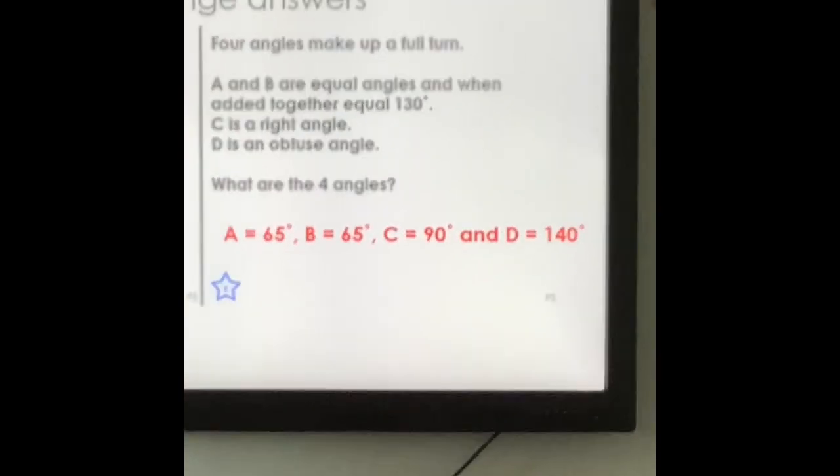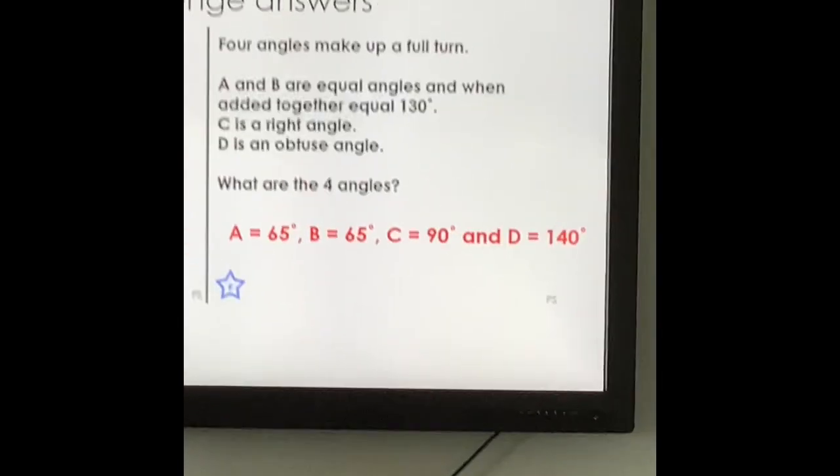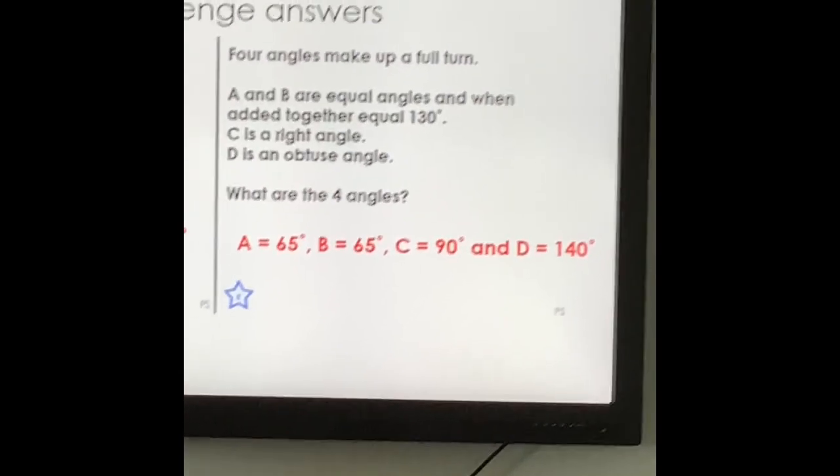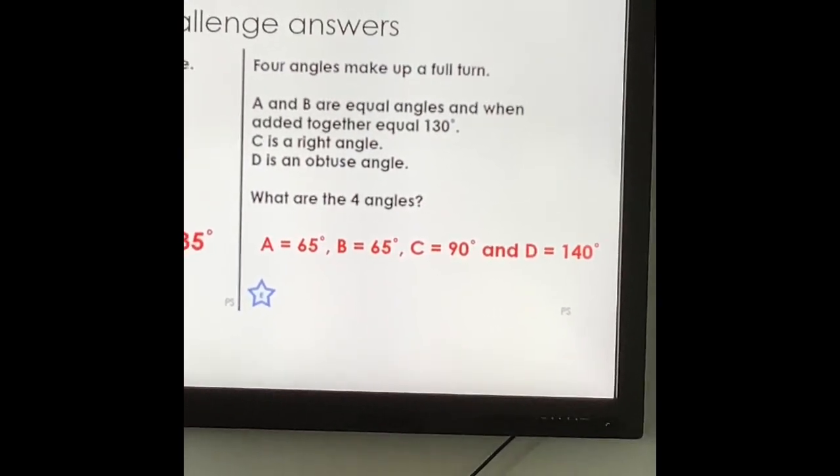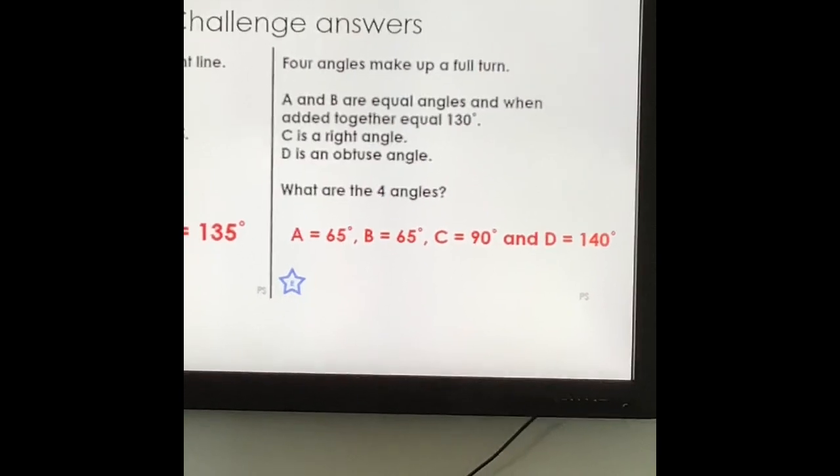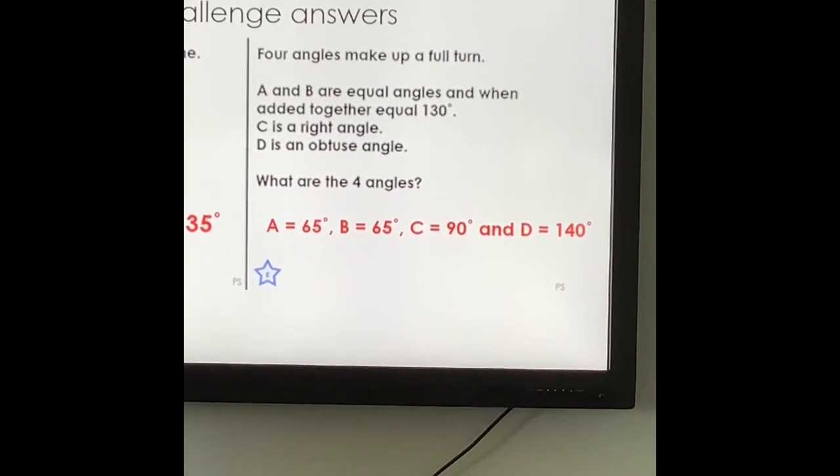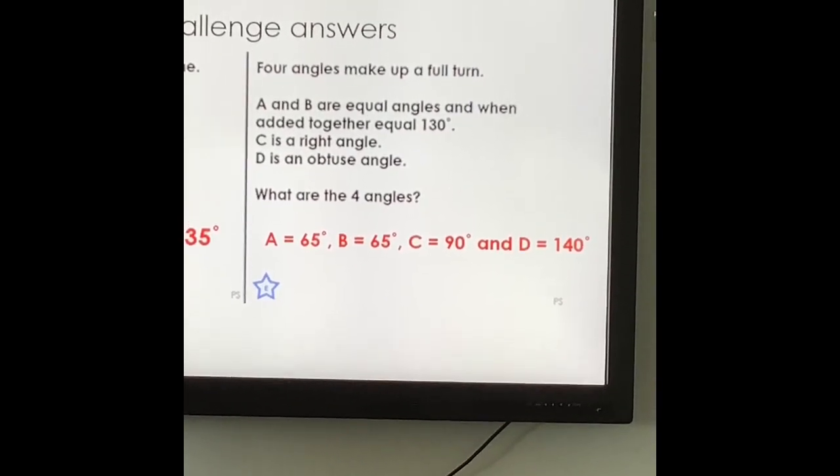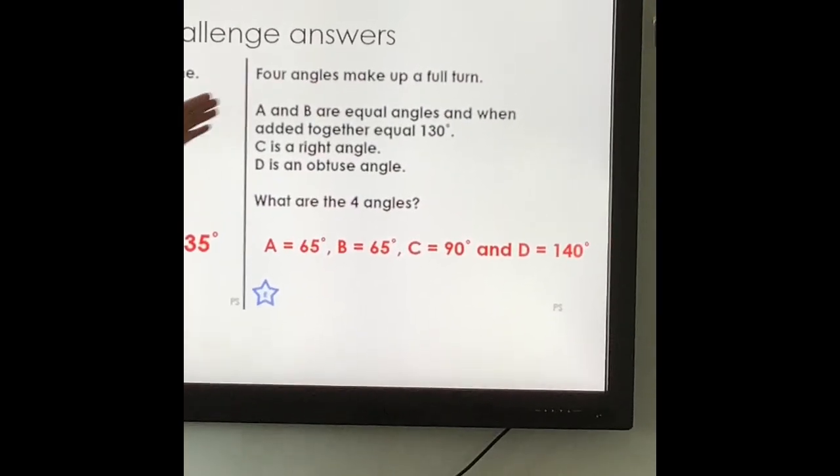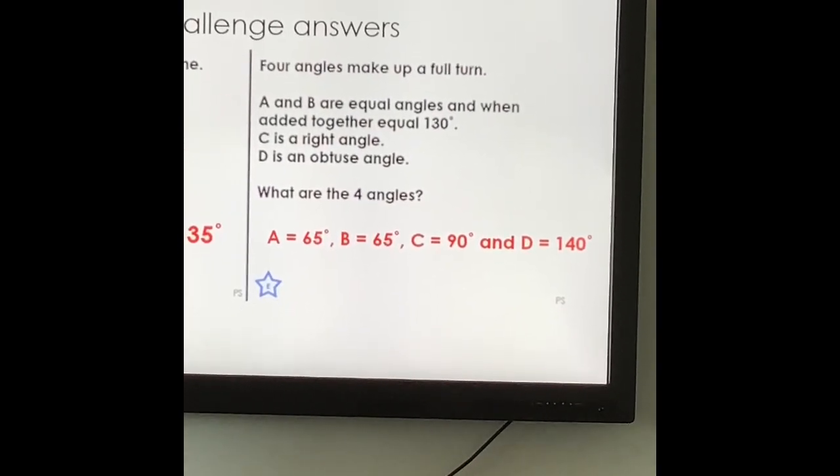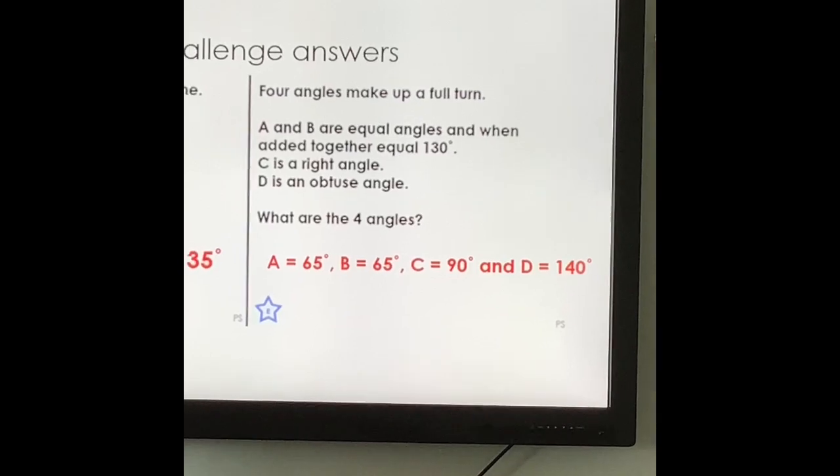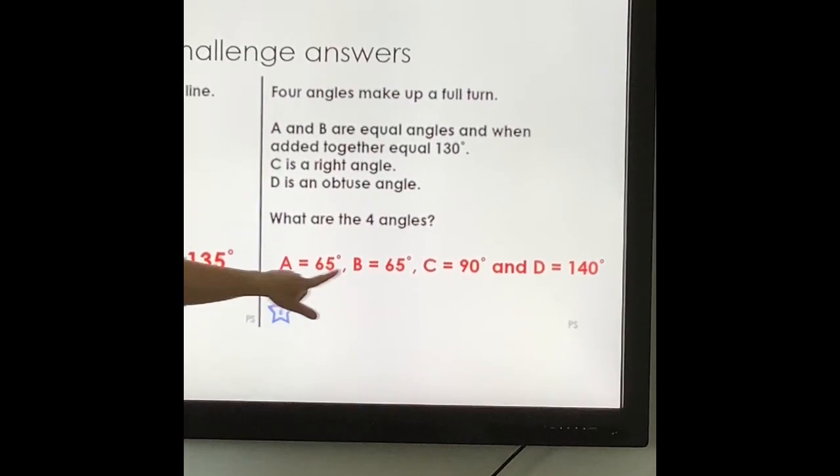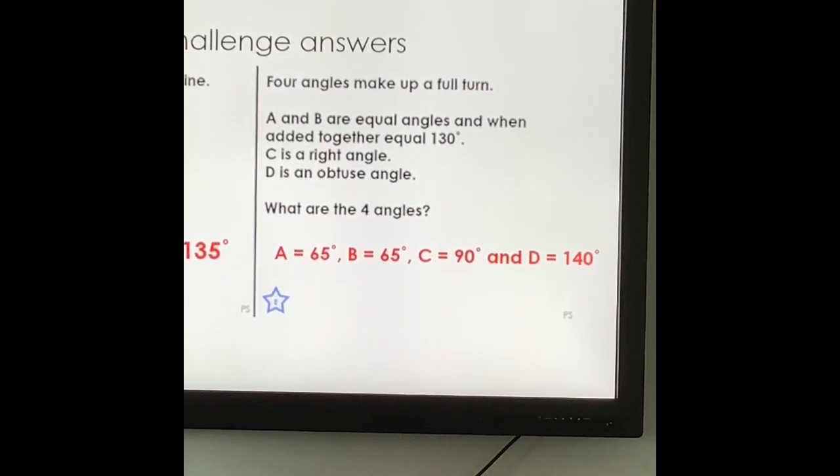This time four angles made up a full turn. Now a full turn hopefully you knew was 360 degrees. A and B are equal angles and when added together make 130 degrees. So the first thing to do there is to half 130 because you know that A and B are equal so they must be the same. Half of 130 is 65 so you know that A and B are 65 degrees.